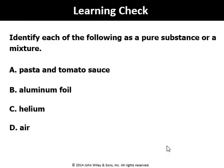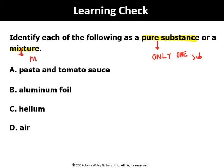Now I may ask you to work on this question: identify each of the following as a pure substance or a mixture. To answer this question, you need to identify which one is pure and which one is a mixture. A pure substance means only one substance, and a mixture means a combination of substances — more than one substance. Please pause the video, think about it, then come back and check if your answer is correct.